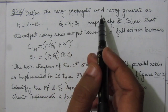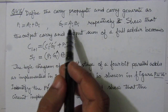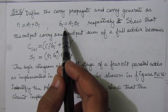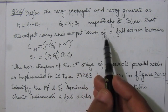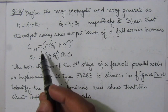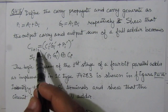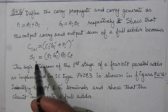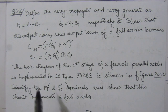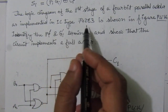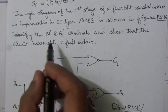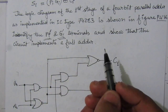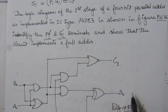The problem is: define the carry propagate and carry generate. First we assume carry propagate and carry generate respectively. Then show that the output carry C_{i+1} and output sum of a full adder. In the second part, we are given a logic circuit implemented with IC type 7483, as shown in figure P4.16. We have to identify the P_i dash and G_i dash terminals so that the circuit implements a full adder. Let us solve this problem one by one.